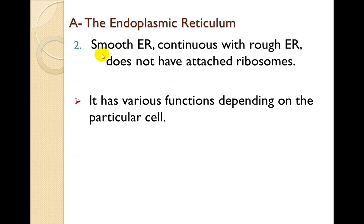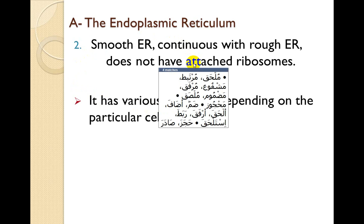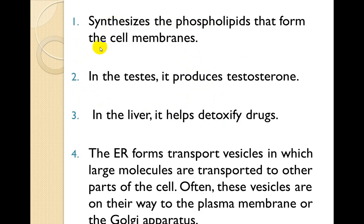The second type is the smooth endoplasmic reticulum, which contains no attached ribosomes and has various functions different from the rough endoplasmic reticulum. The function depends on the cell type: smooth endoplasmic reticulum synthesizes the phospholipids that form the cell membrane (تصنع الفوسفوليبيد اللي يتكون منه غشاء الخلية). In the testis it produces testosterone, while in the liver it helps to detoxify drugs. البنية متشابهة لكن الوظيفة مختلفة.